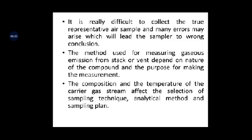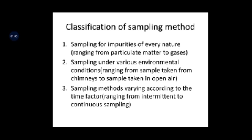The essential requirements for air sampling might be to calculate the extent of air pollution, or to find out what kind of instrument is essential for the control of pollutants that are emitted. The composition and temperature of the carrier gas stream affect the selection of different sampling techniques, analytical methods, and the sampling plan. Classification of sampling methods depends on sampling for impurities of every nature — whether for particulate matter, gaseous matter, or both.